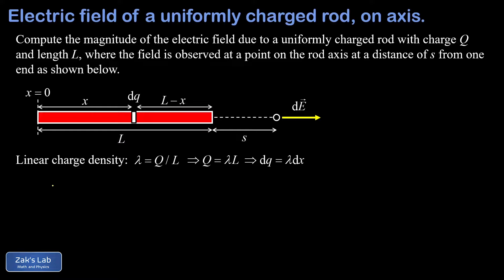So now all the setup is done and we can write down the electric field contribution of this little charge dq. So our contribution dE is given by the formula for the electric field of a point charge. This time our charge is given by dq. So we have dq over 4 pi epsilon zero times the distance between the point charge and the observation point that's s plus L minus x all squared.